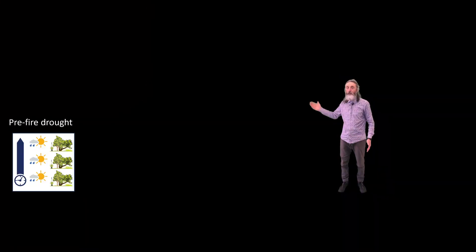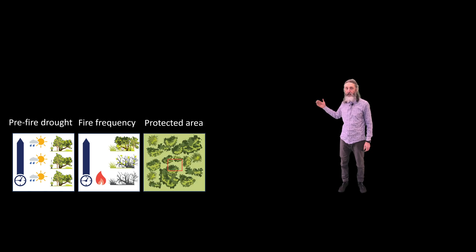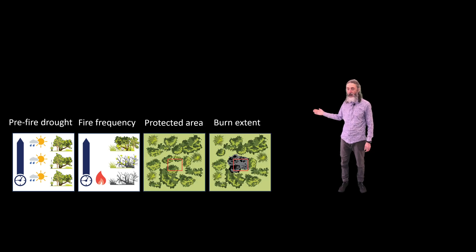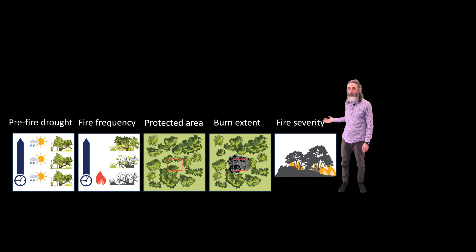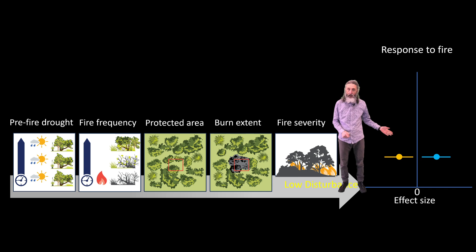When sites were least disturbed, the 2019-20 fires had the smallest impacts. So when rainfall had been higher, the site hadn't been burnt often or recently, it was in a protected area, much of the surrounding land was unburnt or fire severity was low, we found some species declined and others increased but not by very much.